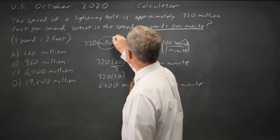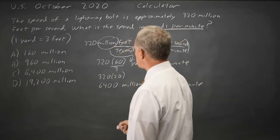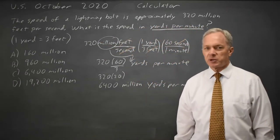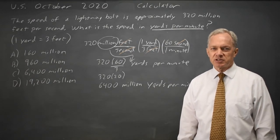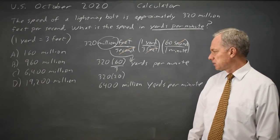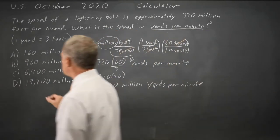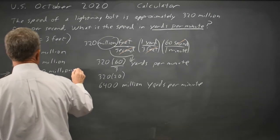And I left out the million here but that's not going to matter in choosing our answer because they didn't give us an opportunity to make that mistake. And 6,400 million is choice C.